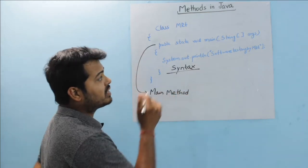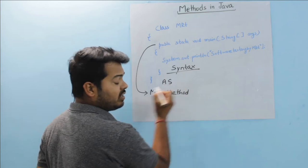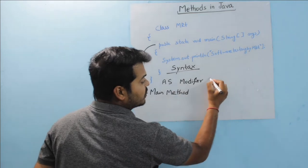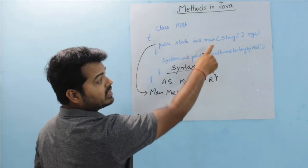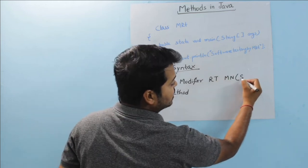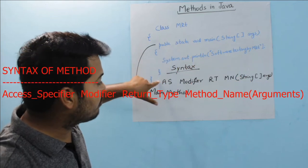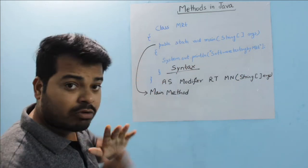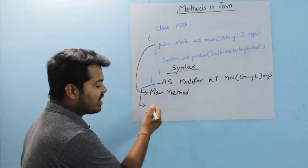Now the question arises: what is the syntax of a method? The syntax of a method looks like: access specifier, then modifier, then return type, then method name, and then arguments. This is the syntax of your main method or any other method.